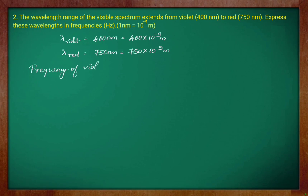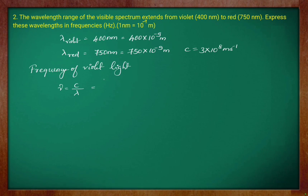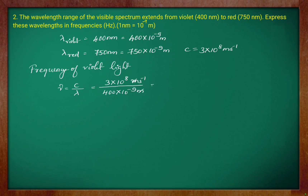Frequency of violet light is calculated using the formula nu is equal to C by lambda. We know C has a value of 3 into 10 to the power 8 meter per second. Substituting, C is 3 into 10 to the power 8 meter per second divided by the wavelength for violet light, which is 400 into 10 to the power minus 9 meter. Upon simplification, we get 7.5 into 10 to the power 14 hertz. This is the frequency corresponding to violet light of wavelength 400 nanometer.